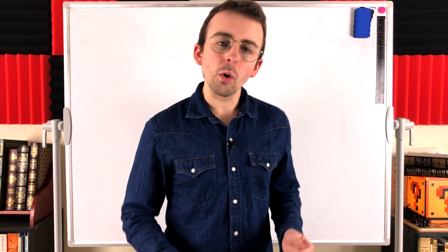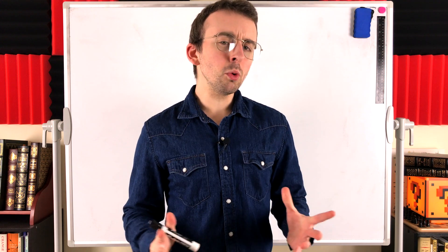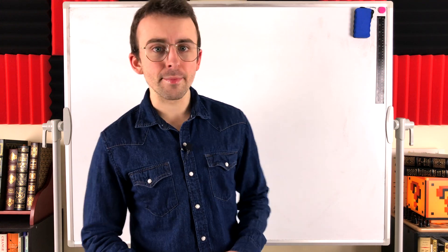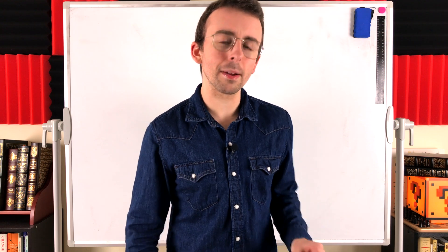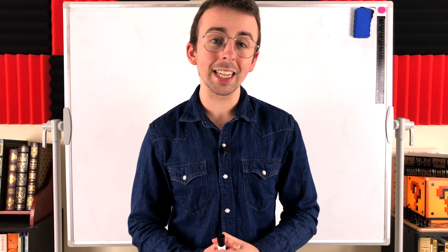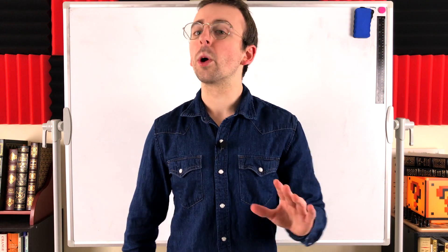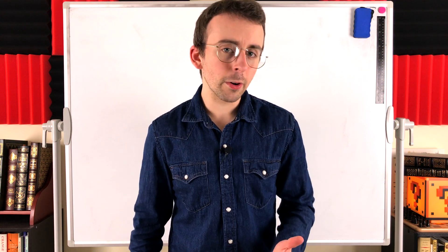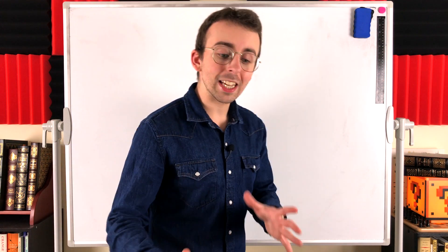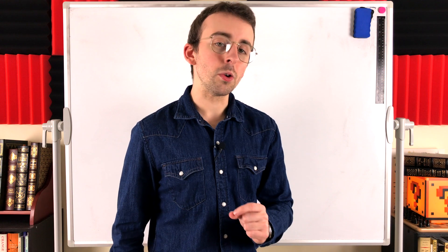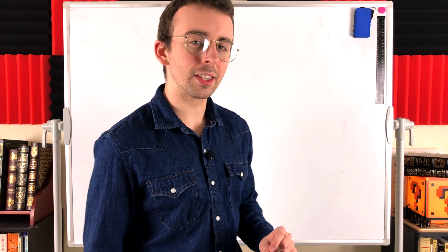What are bell numbers and what's a recurrence relation we could use to calculate them? That's what we'll be going over in today's Wrath of Math lesson. We'll talk about partitions of sets, introduce bell numbers, and see a recurrence relation we can use to calculate them and where that recurrence relation comes from. We're not going to go through a full proof in this lesson, but the ideas we go over will closely mimic what we'll use in our proof, which we'll do in the next lesson on bell numbers.